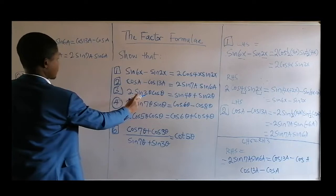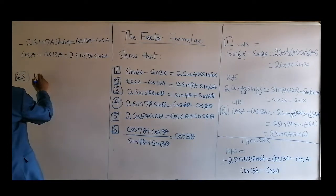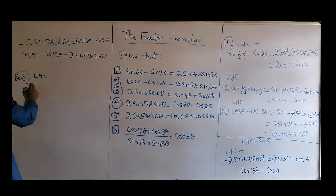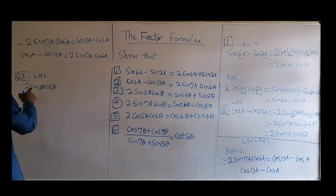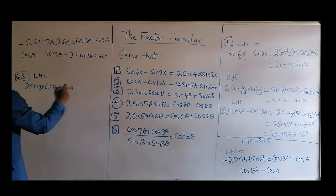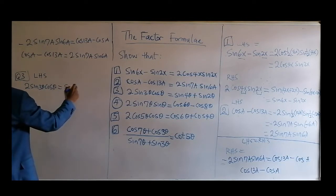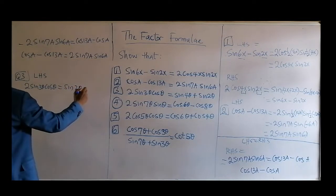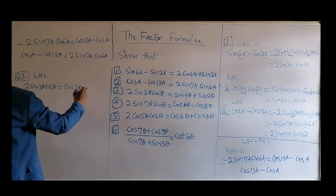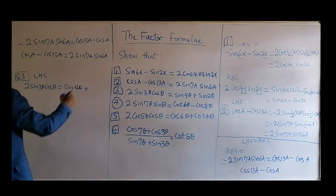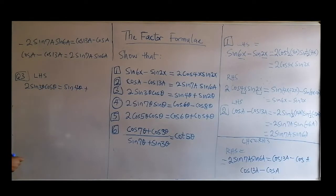From the left-hand side, we have 2sin(3θ)cos(θ). When you have sine times cosine, that would be sine of (3θ minus θ) — that's 2θ — then plus sine of (3θ plus θ) — that would be 4θ.